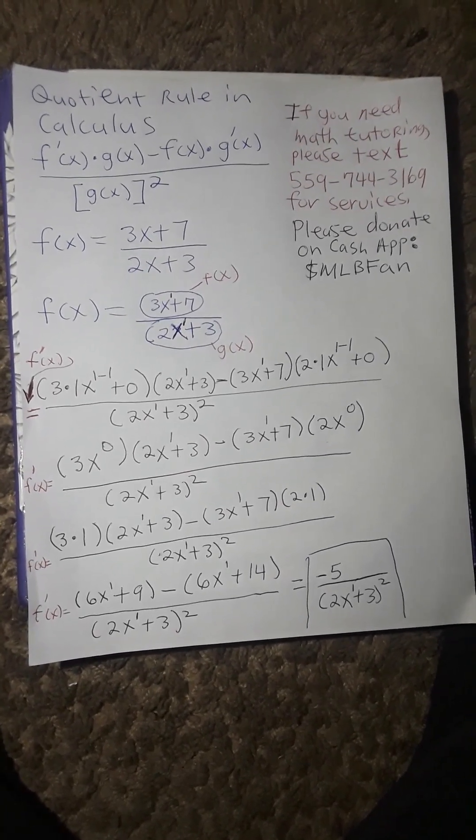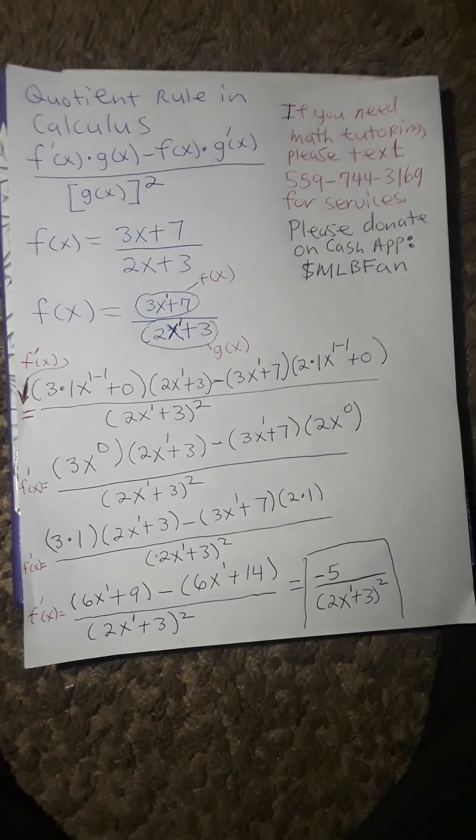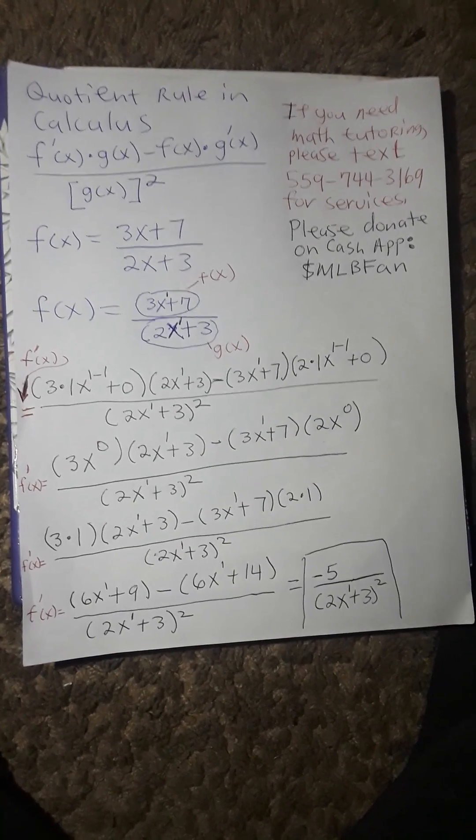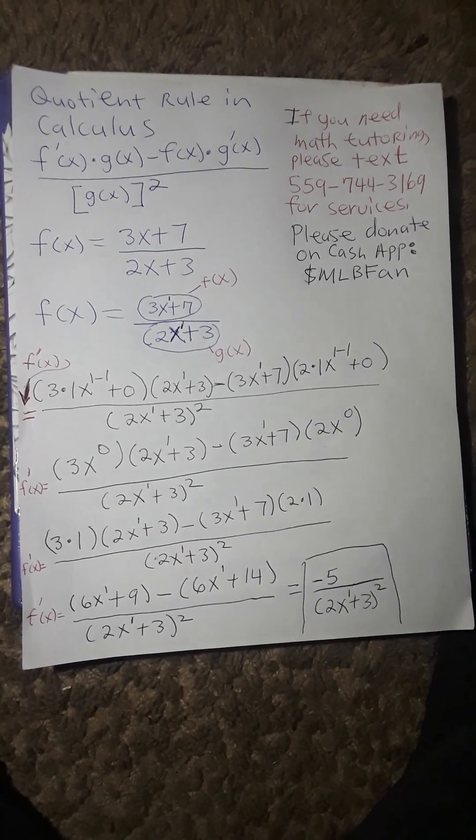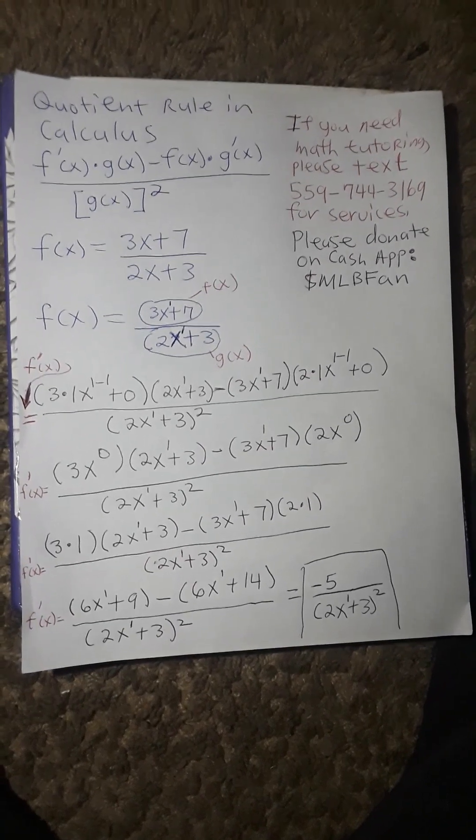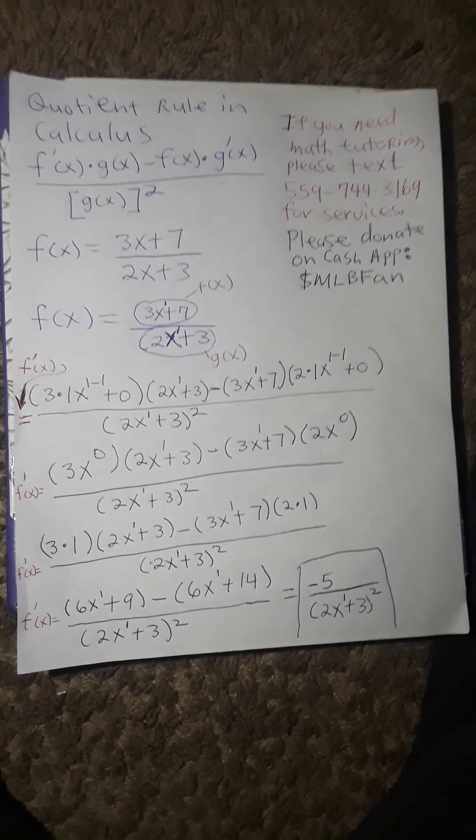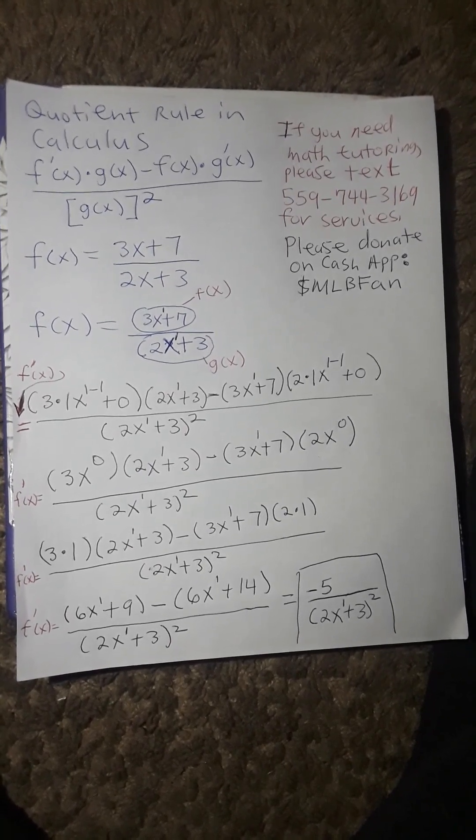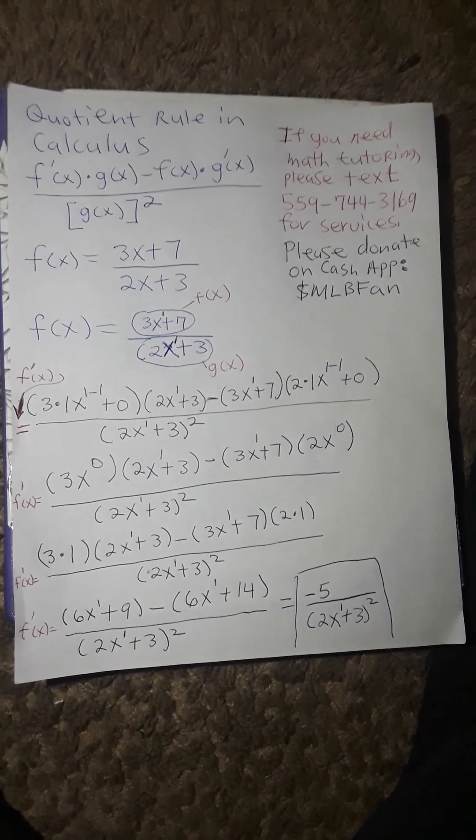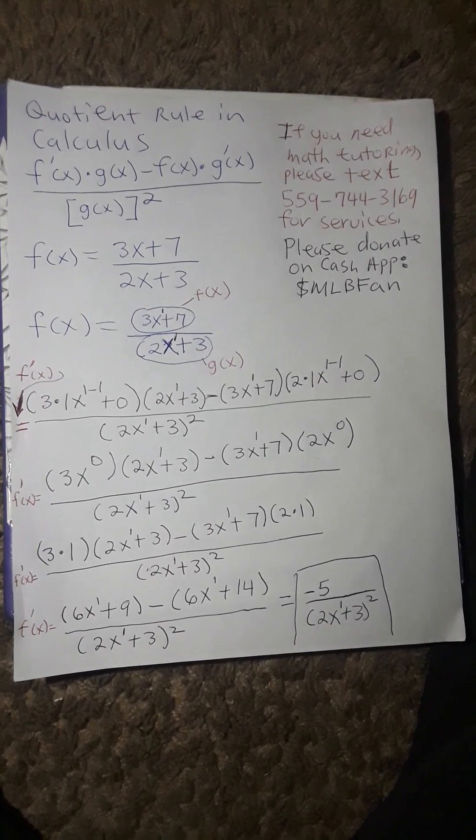So, for f prime of x, it's going to equal 3 times 1 times 2x to the 1 plus 3 minus 3x to the 1 plus 7 times 2 times 1 divided by 2x to the 1 plus 3 squared.